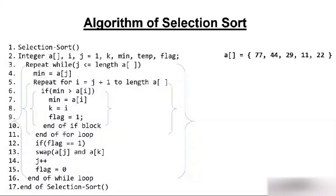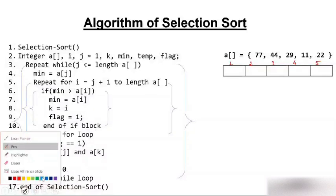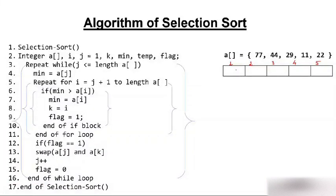Now let's make an array with indices 1 through 5. The first element is 77, the second is 44, the third is 29, then 11, and then 22.